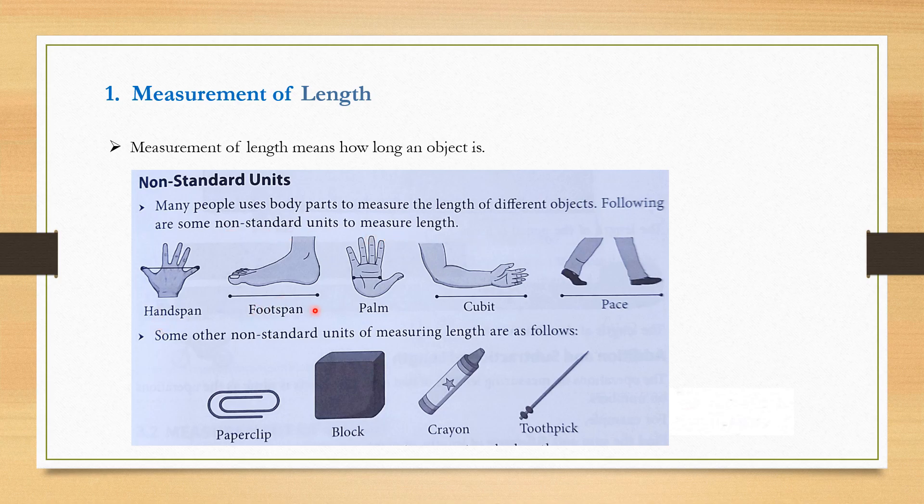Hand span, foot span, palm, cubit, pace - these all are non-standard units. Some other non-standard units of measuring length are as follows: paper clip, block, crayon, toothpick.